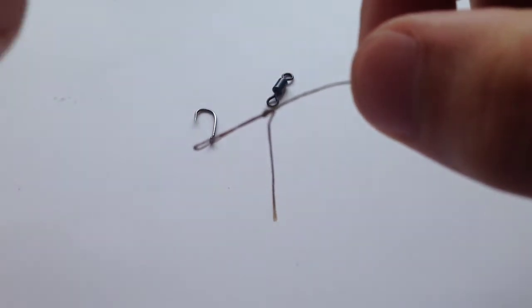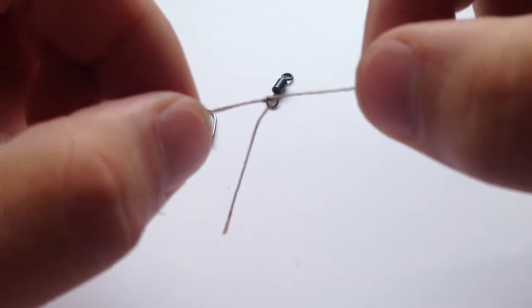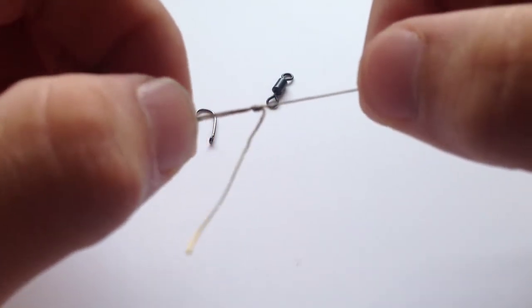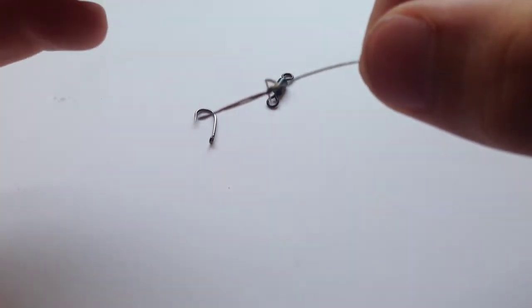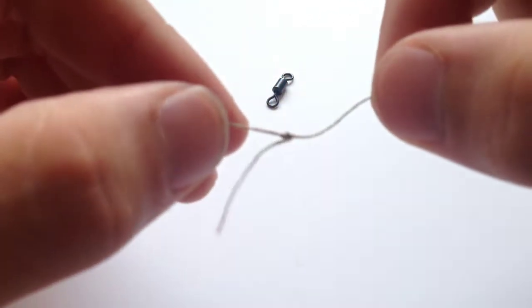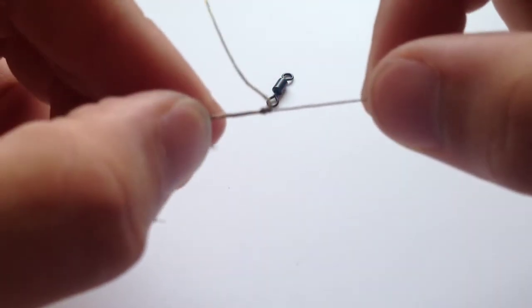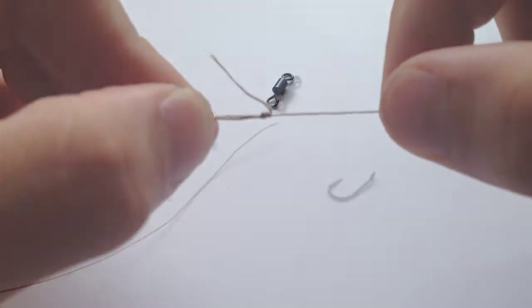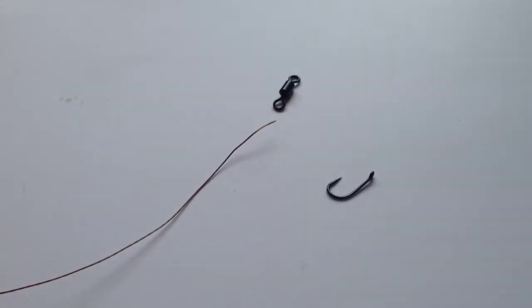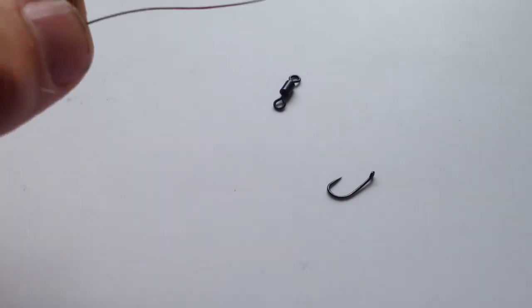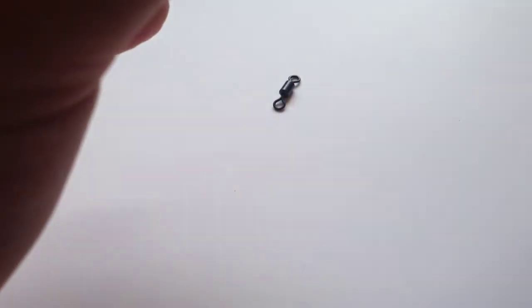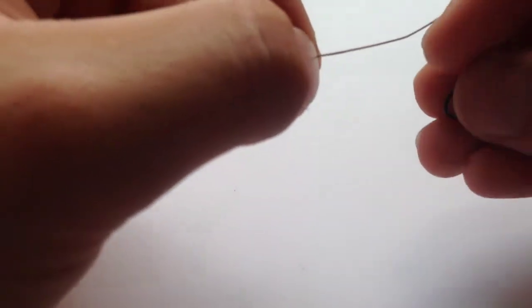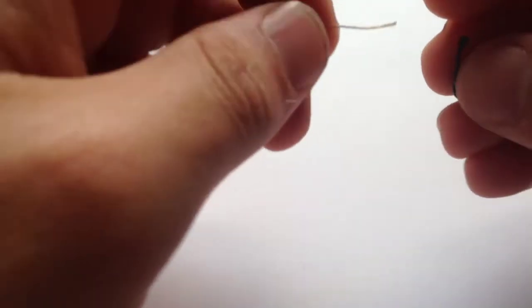You might want to trim the excess materials while you're doing it because this can help, especially if you're just starting out. You don't want excess bits of braid getting in the way when you're tying what seems like a confusing knot. Once you've tied your overhand knot to make the hair, grab your hook and thread the braid through the eye of the hook.